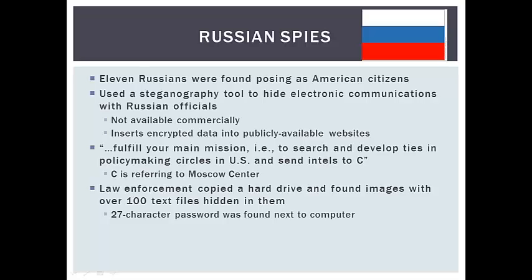When the Russians were first investigated, law enforcement seized and copied a hard drive. They searched the area around the computer and found a 27-character password necessary to access information on the computer — the password was just left in plain sight. They then discovered an address book on the computer filled with links and images, and found over 100 text files hidden in these images. None of these files were found to compromise intelligence, but if they had, they could have been very dangerous in the wrong hands.